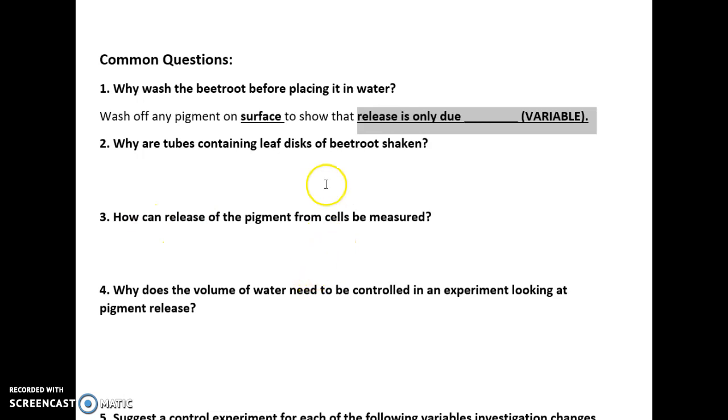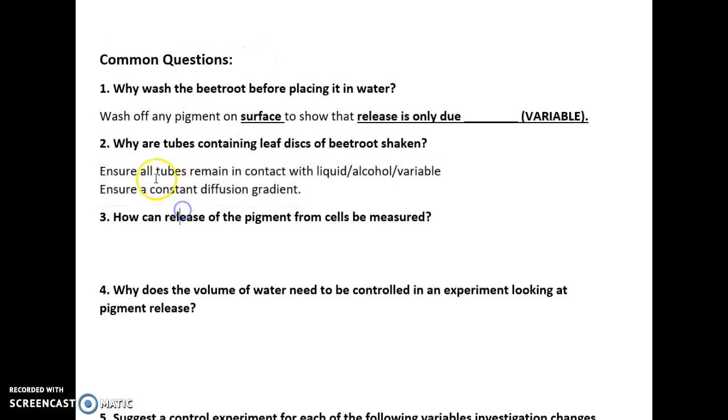Why are tubes containing leaf discs of beetroot shaken? When you put the leaf disc into the test tube, it's to ensure that all tubes remain in contact with the liquid—with whatever variable you're assessing. That ensures a constant diffusion gradient.